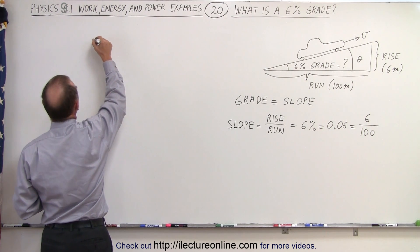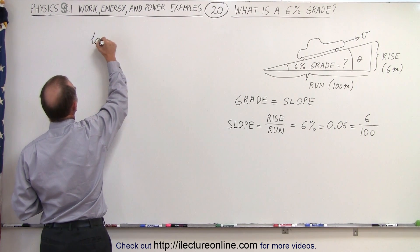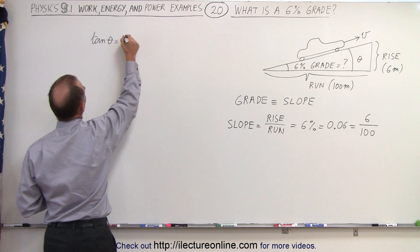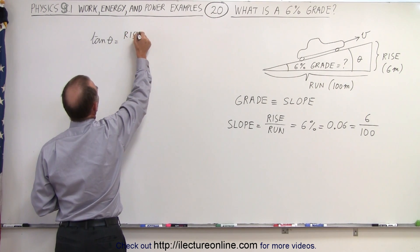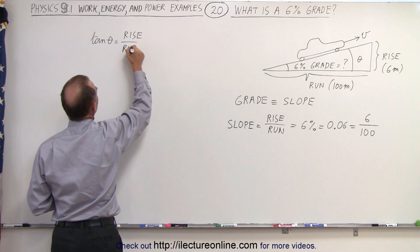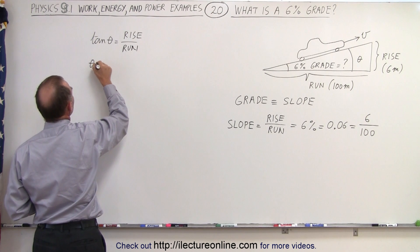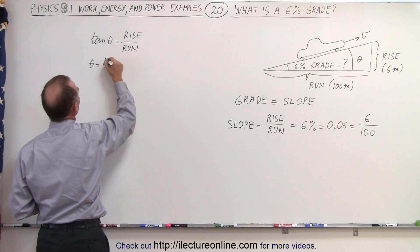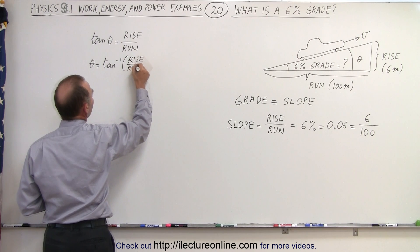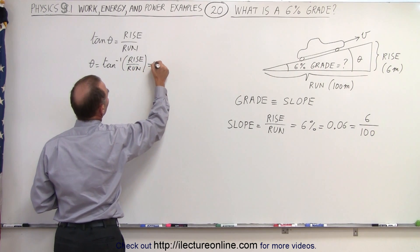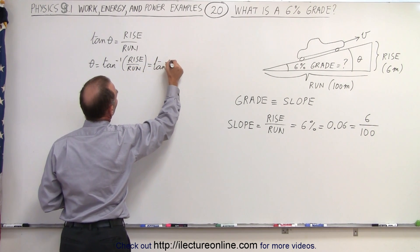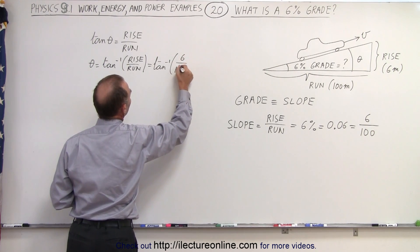So here we can say that the tangent of theta is equal to the rise divided by the run, which means that theta is equal to the inverse tangent of the rise divided by the run. And so in this case, that's the inverse tangent of 6 divided by 100. So we're going to find the angle.